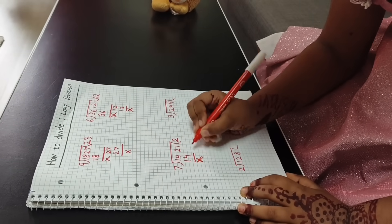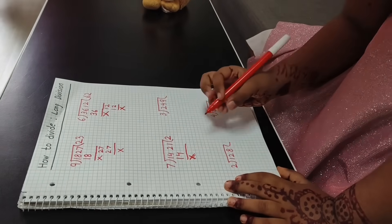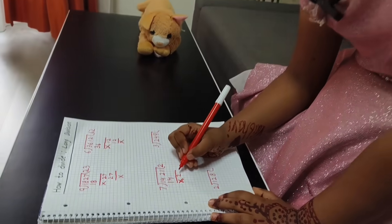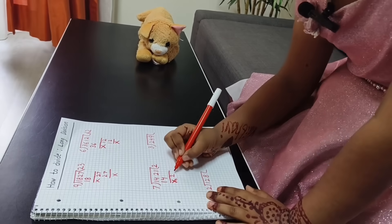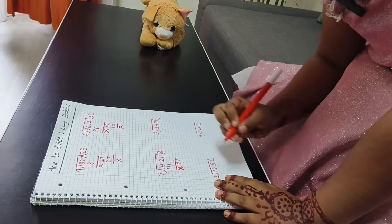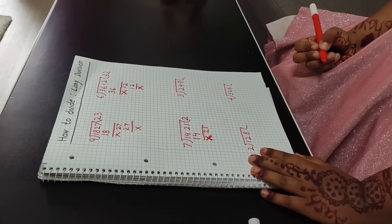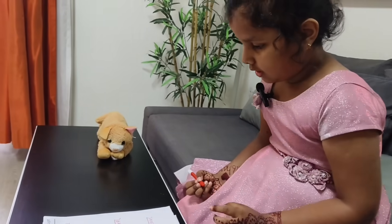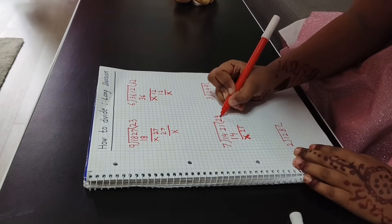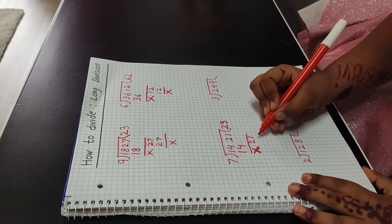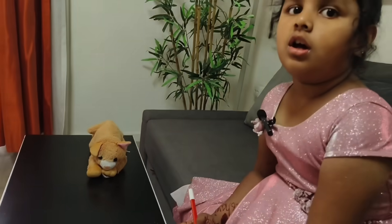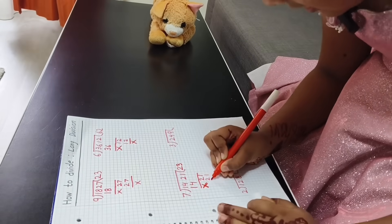Okay, now this is two, so I will write here two. Two is small, okay, so I will write a one. Now I will tell the seven table again: seven one is seven, seven two is fourteen, seven three is twenty-one, okay. Now I will write here three. Seven times three is twenty-one, I will write again twenty-one. So twenty-one minus twenty-one is nothing, okay.